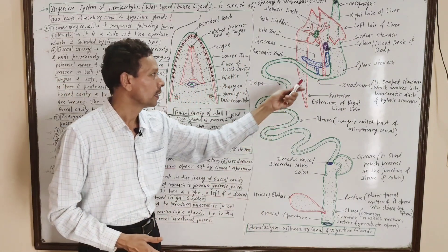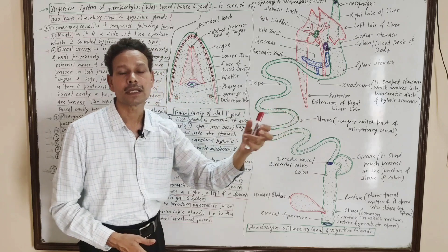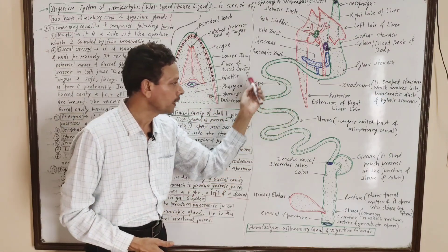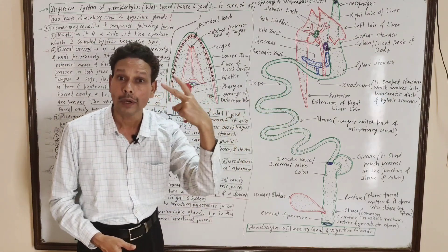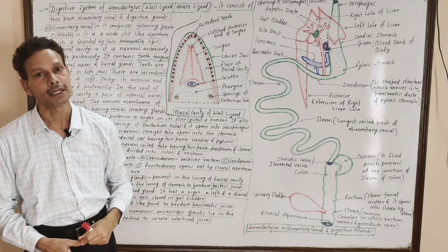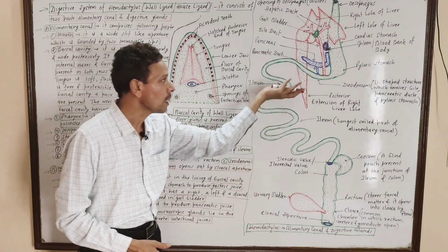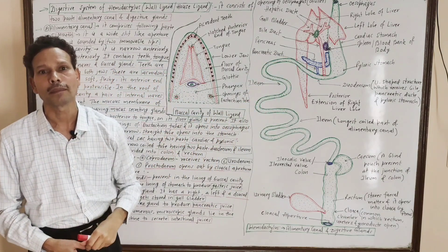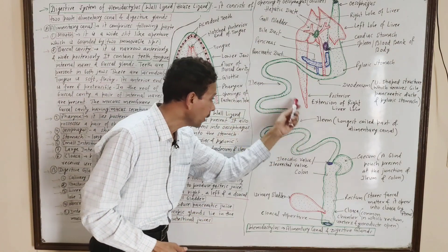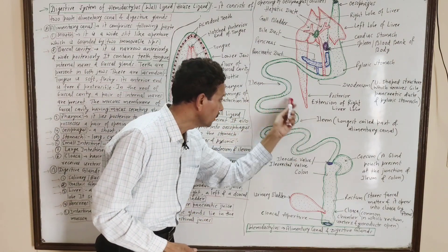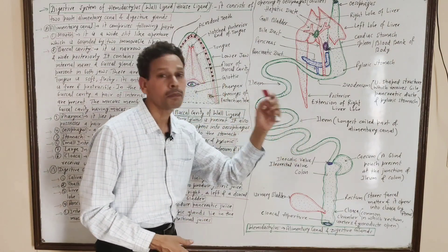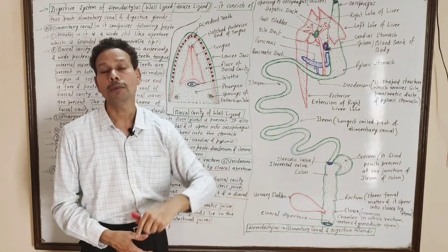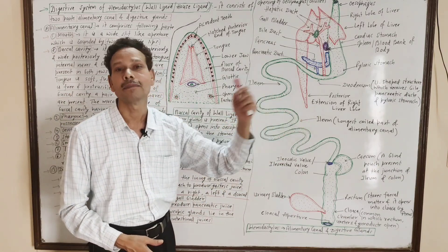The next part of the alimentary canal is the small intestine, which in reptiles has only two parts: the upper U-shaped part is the duodenum, and the lower elongated, longest part of the alimentary canal — a highly coiled tubular structure — is the ileum.